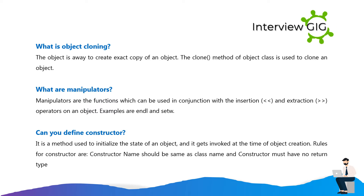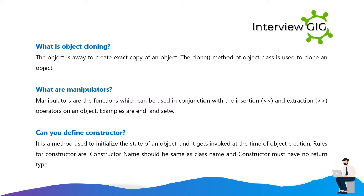What are manipulators? Manipulators are functions which can be used in conjunction with the insertion and extraction operators on an object. Examples are endl and setw. Can you define constructor? It is a method used to initialize the state of an object, and it gets invoked at the time of object creation. Rules for constructor are: constructor name should be same as class name, and constructor must have no return type.